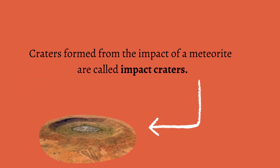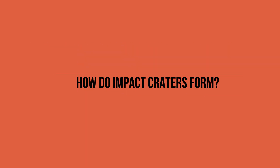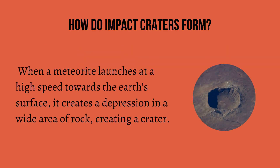Craters formed from the impact of a meteorite are called impact craters. And how do impact craters form? When a meteorite is coming at a high speed towards the Earth's surface, it creates a depression in a wide area of rock, creating a crater.